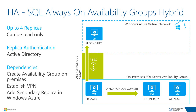SQL 2014 CTP2 supports a hybrid model where the Always On availability group is created on-premises, but you can add a secondary replica in Windows Azure. This architecture provides a hot standby completely isolated from your physical on-premises data center. It requires a site-to-site virtual network connection for Active Directory authentication and replication traffic. SQL Server 2014 has built-in support for directly creating the replica virtual machine in your Windows Azure subscription and adding it to the availability group once provisioned.